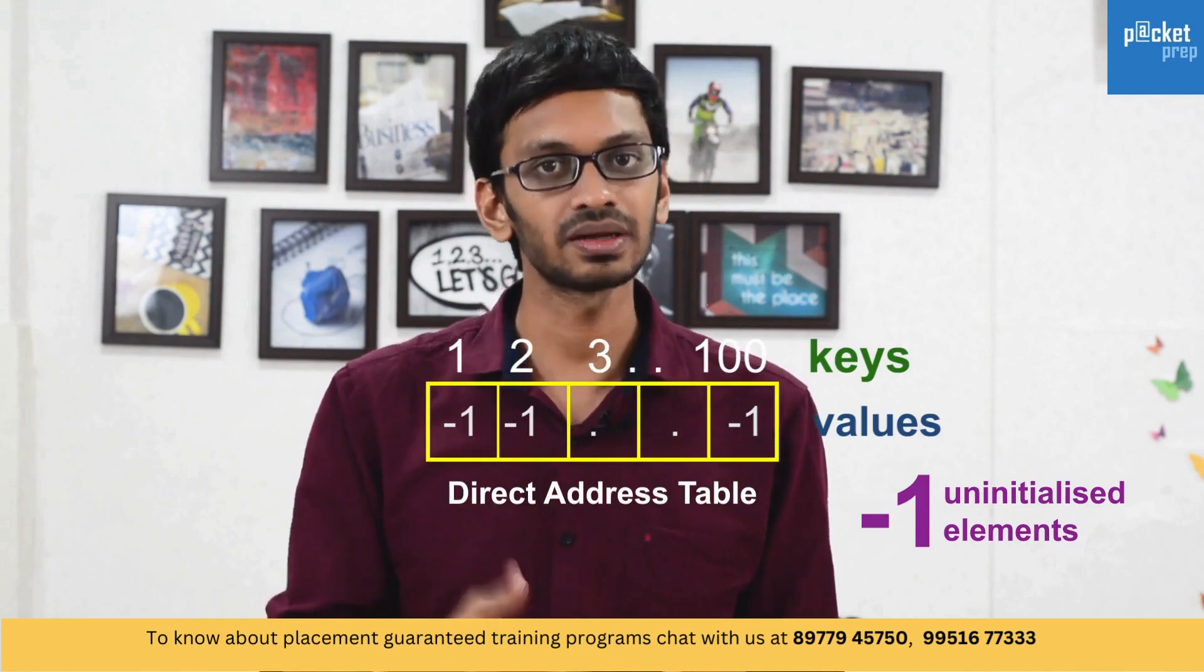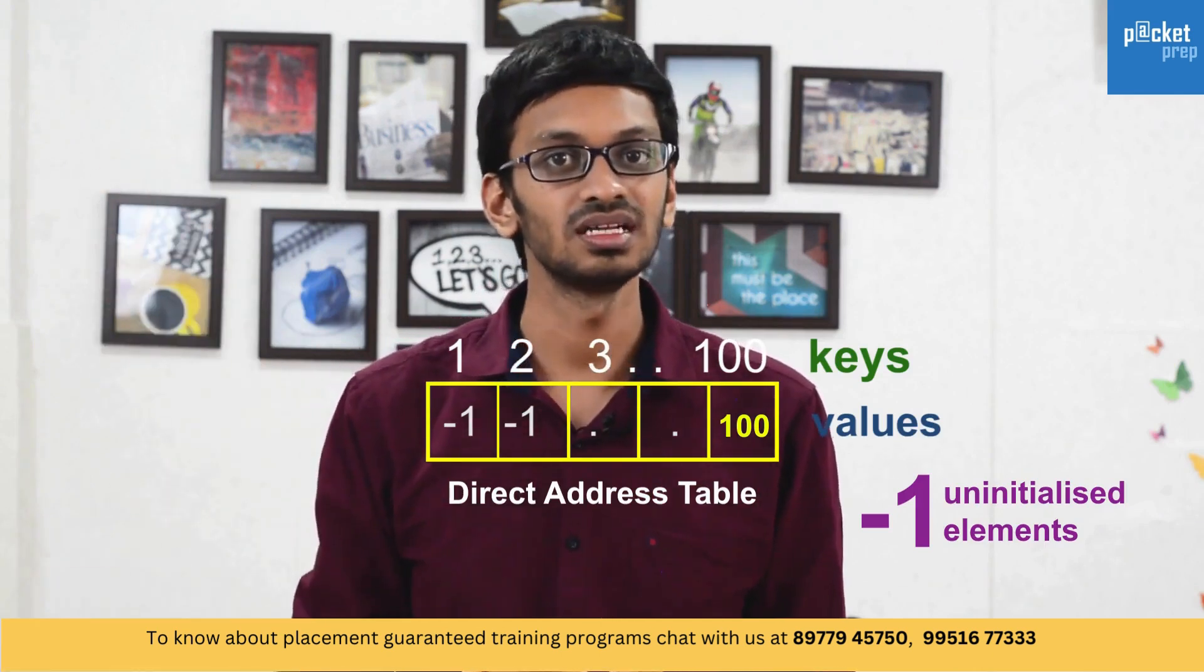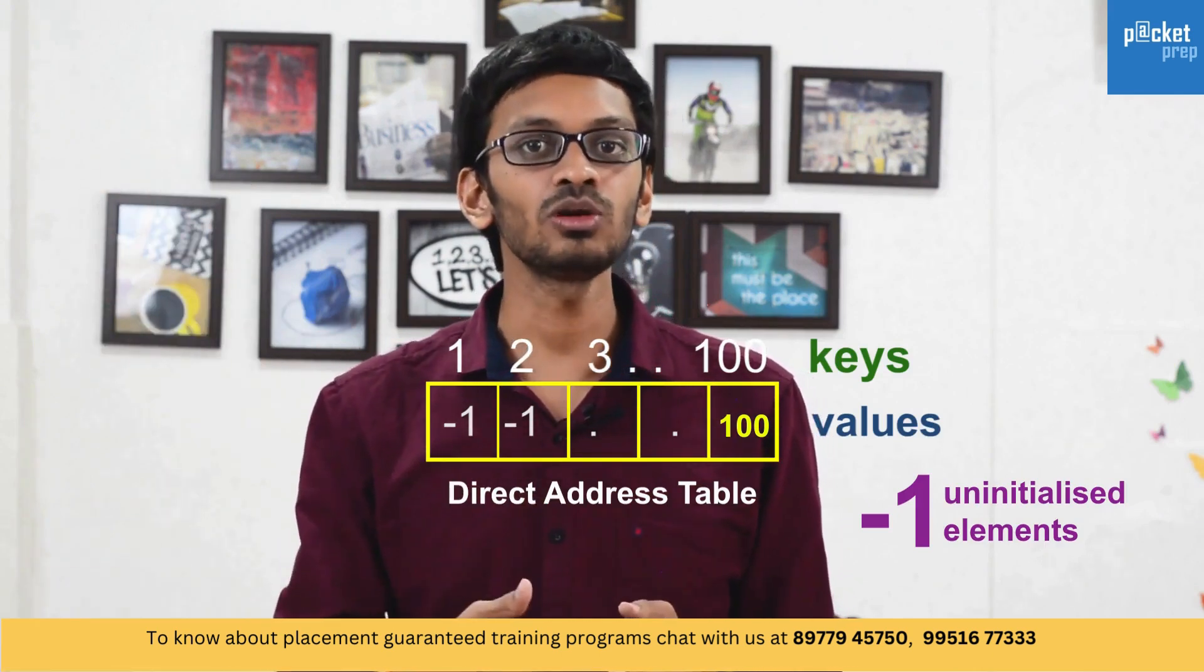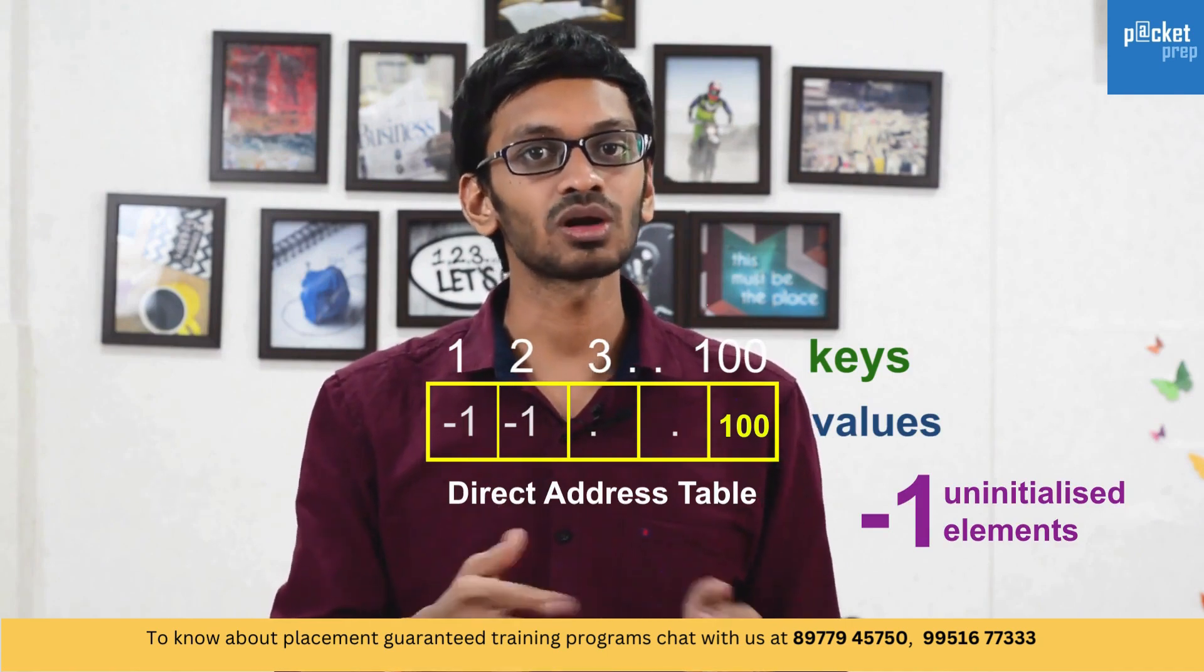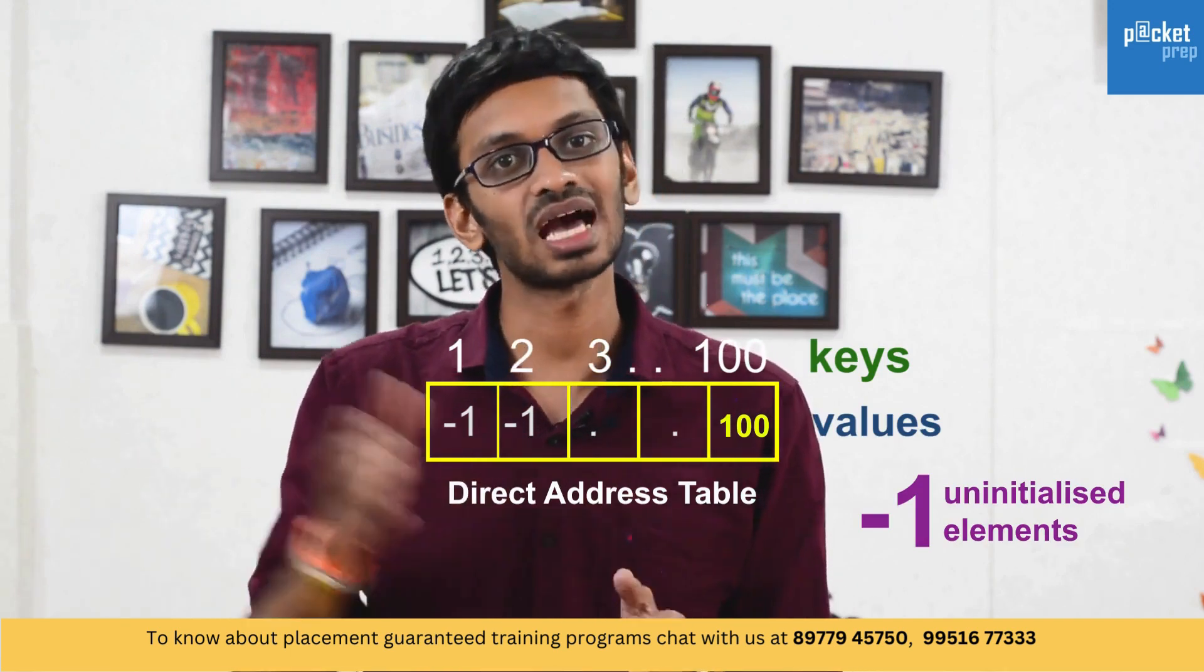If you want to search for a number 100, you will directly go to the 100th index and you can access whether it is present or whether it has occurred or not. In this way, you will try to reduce the complexity into order of constant or order of 1 when it comes to hash tables.